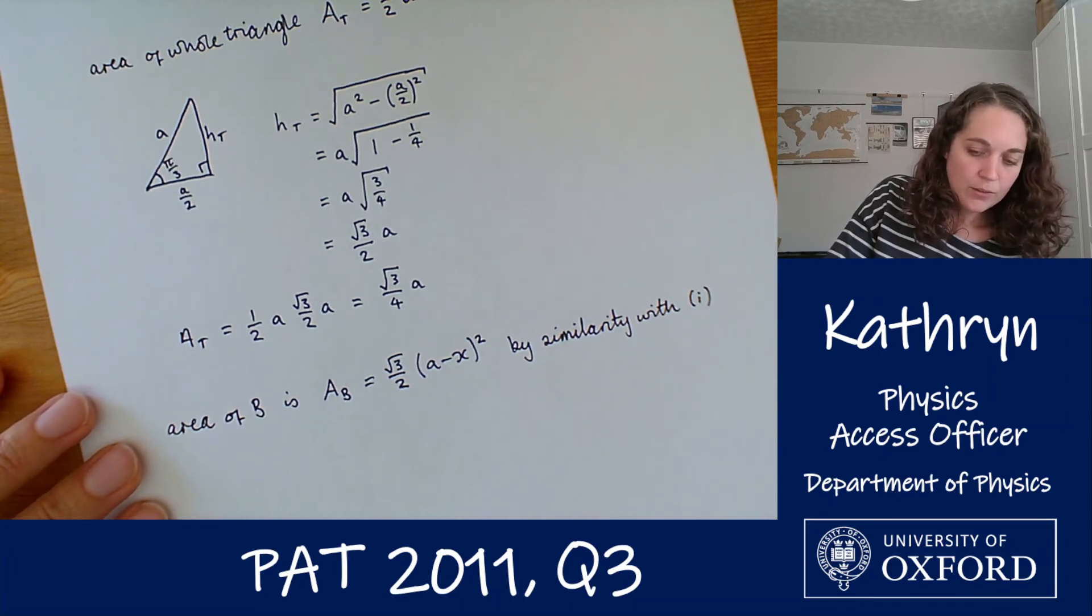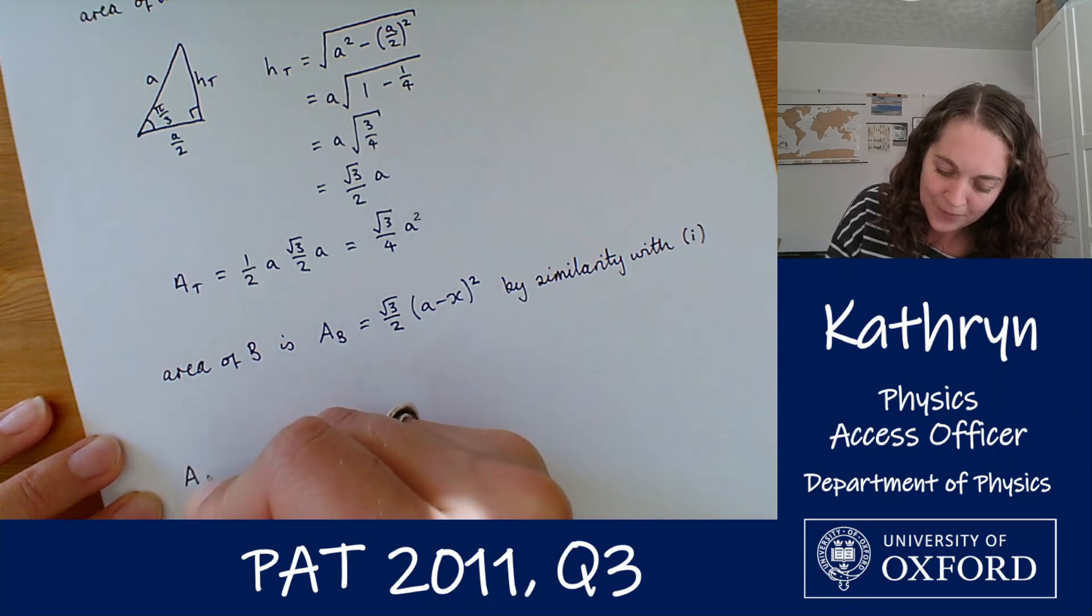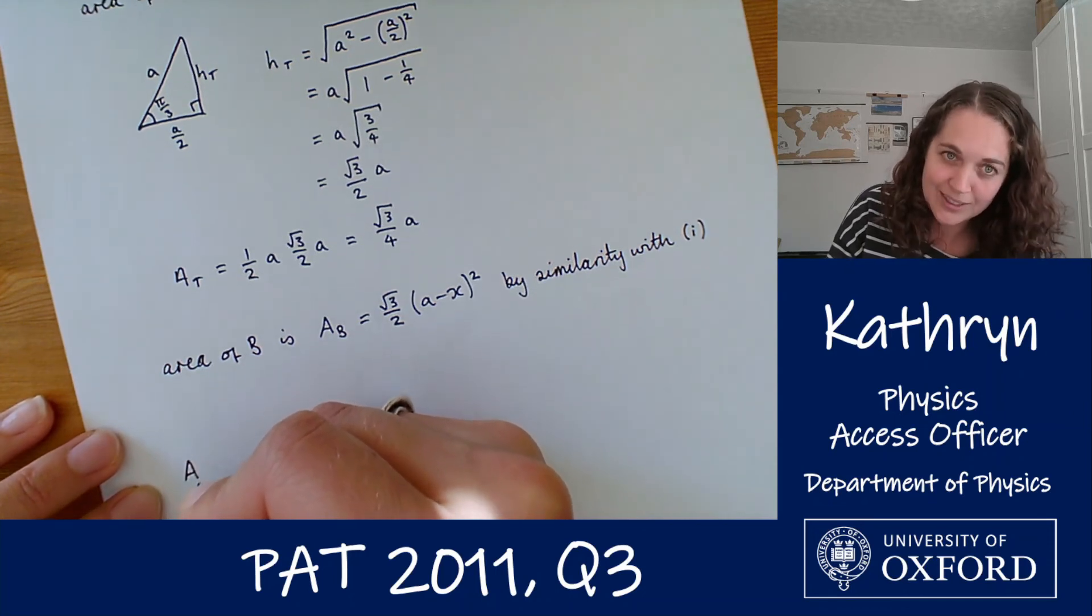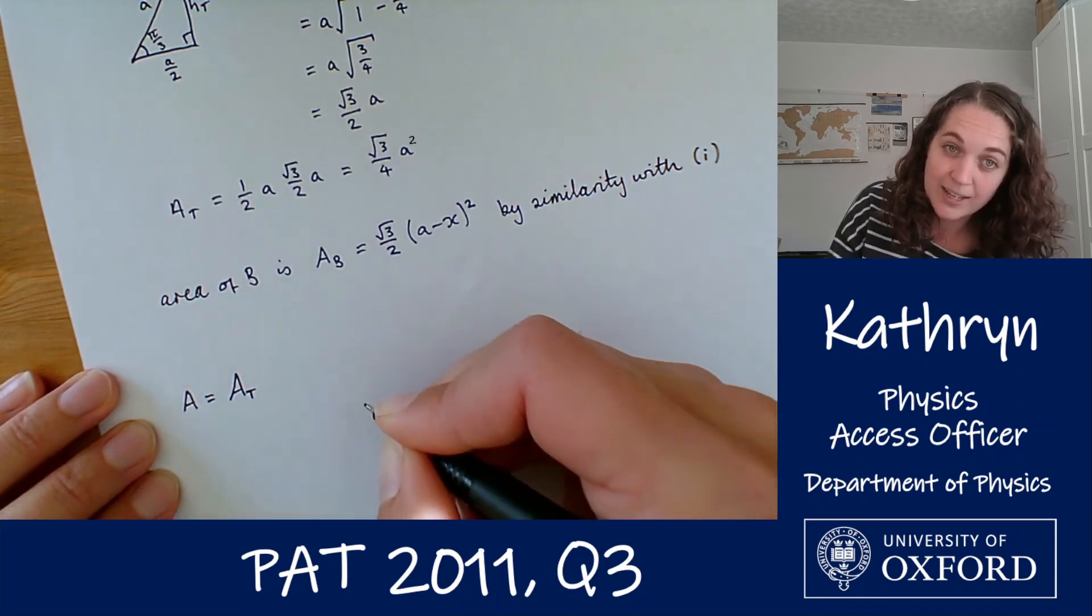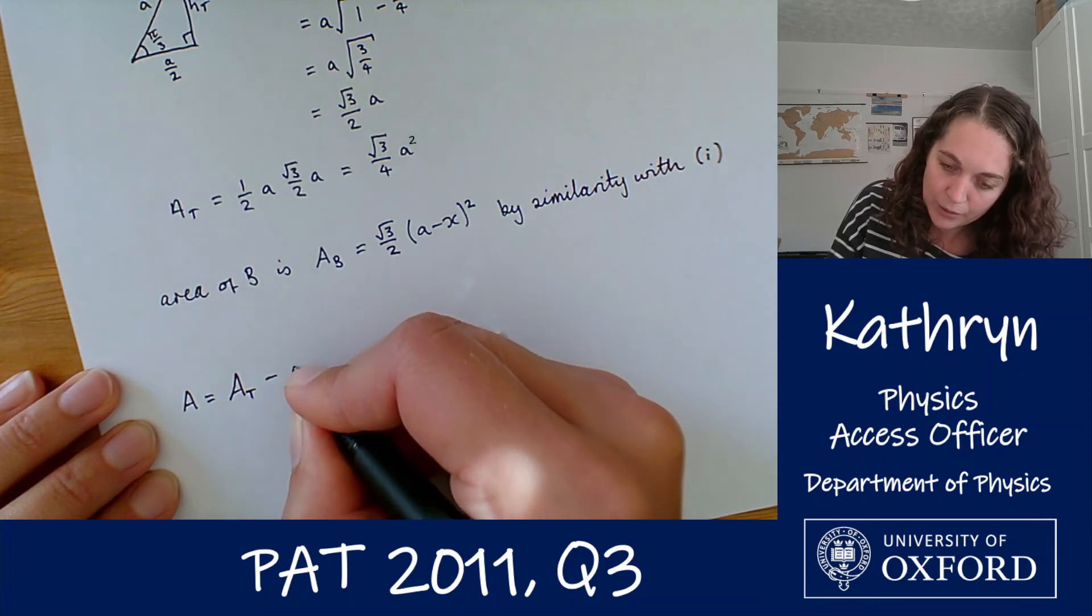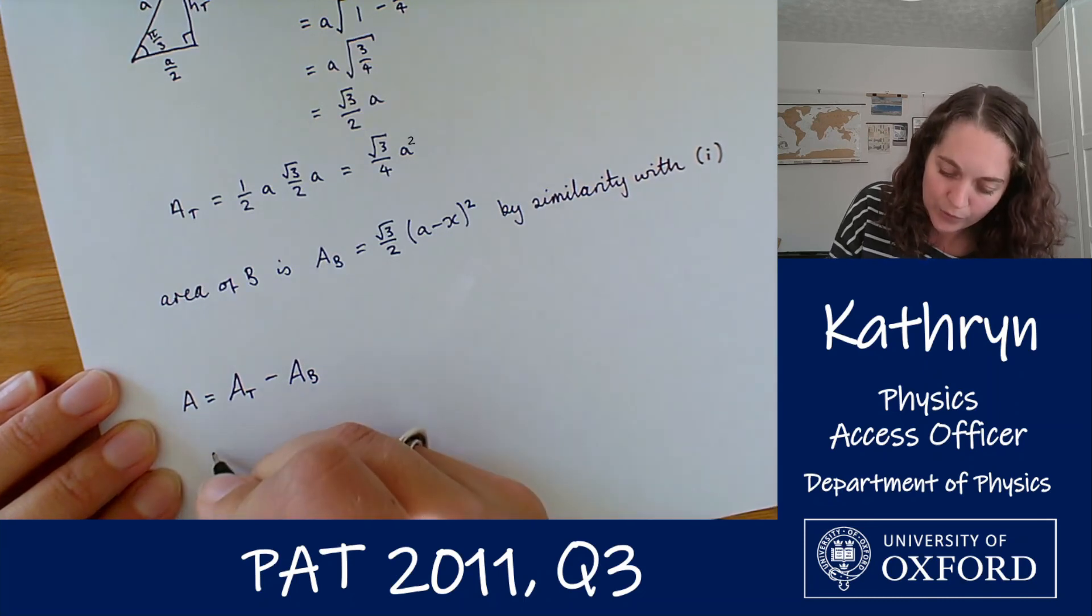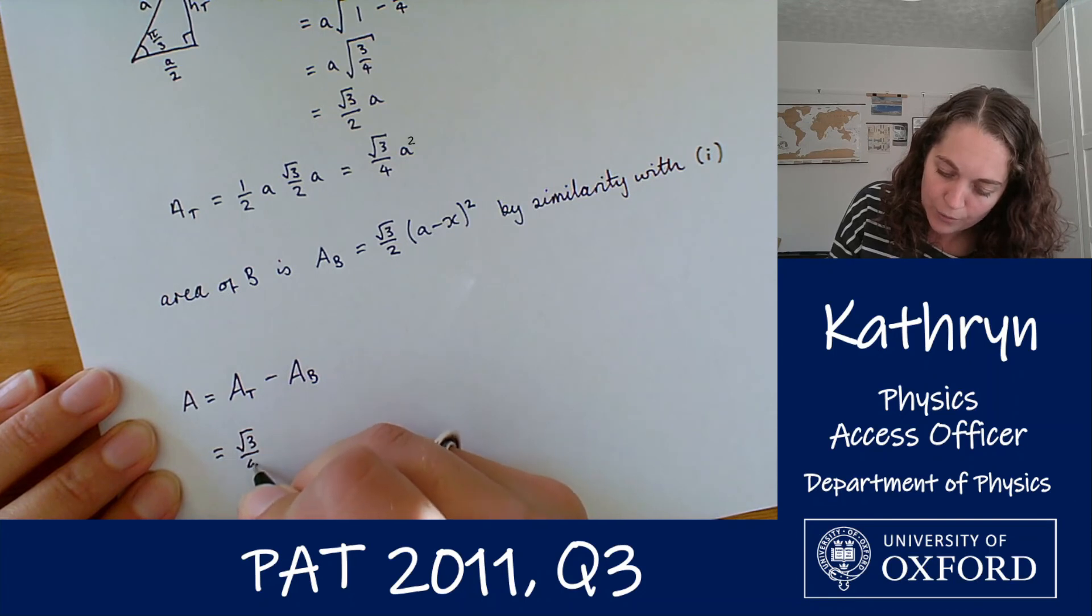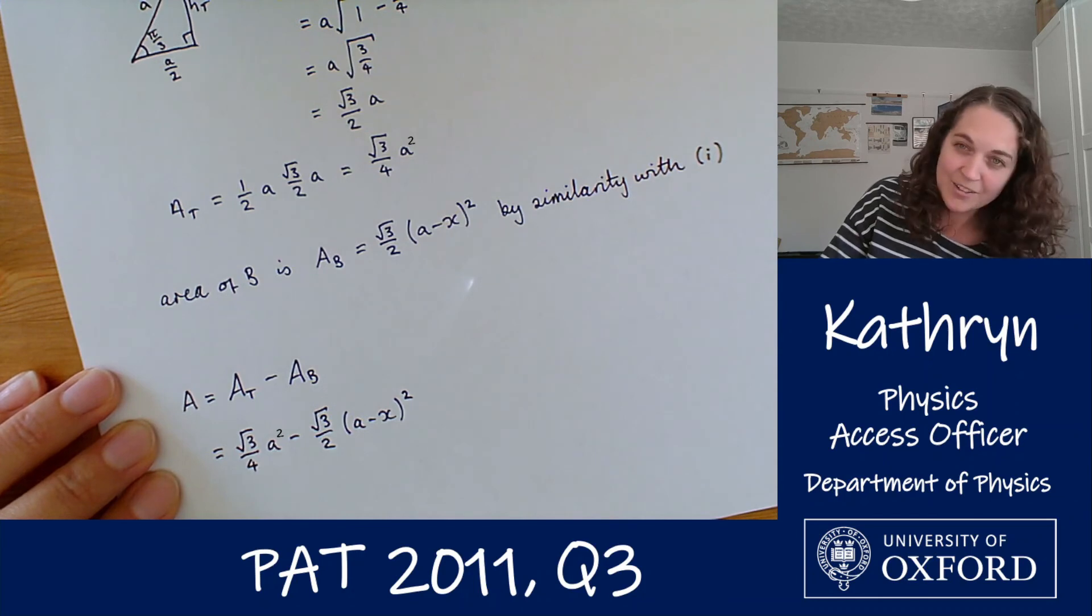Okay, so now we're pretty much done. So we've got the area A, which is what we were actually asked to find out in the first place, is going to be the area of the total triangle A_t minus the area of b. And we've got both of those things written down here. So that is going to be root 3 over 4 a squared minus root 3 over 2 times a minus x all squared. And that is our answer.